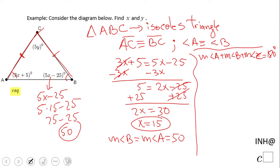We have 50 + 50 + the measure of angle C = 180, which gives us 100 + the measure of angle C = 180.